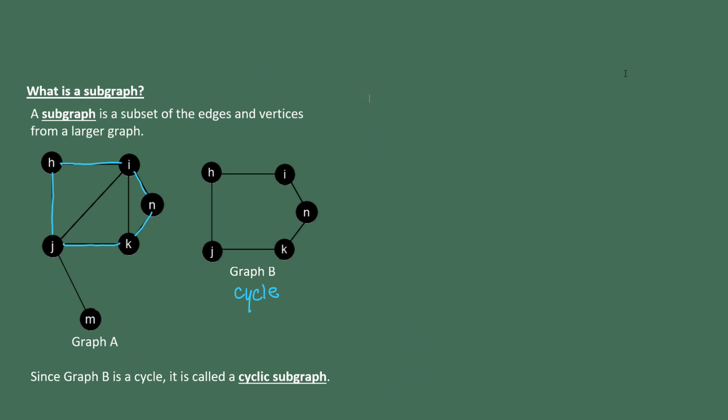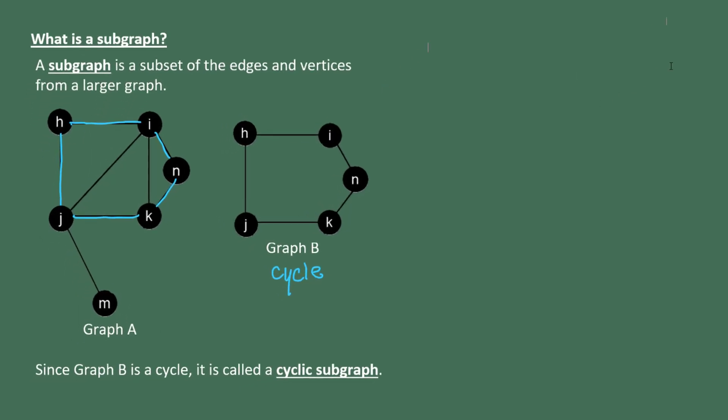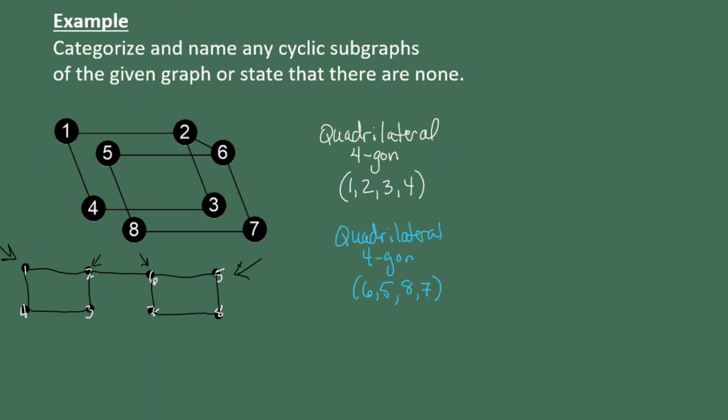So to summarize, a cyclic subgraph is just any subgraph that forms a cycle, beginning and ending at the same vertex, never hitting any vertex twice. Cyclic subgraphs are named just like cycles by listing sequentially the vertices, and they're categorized just like polygons by the number of edges.